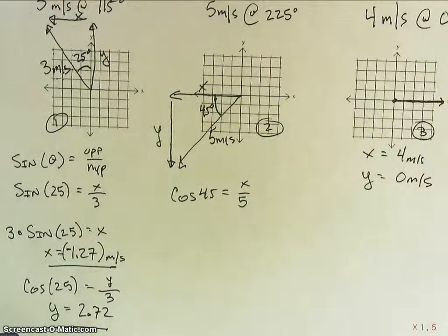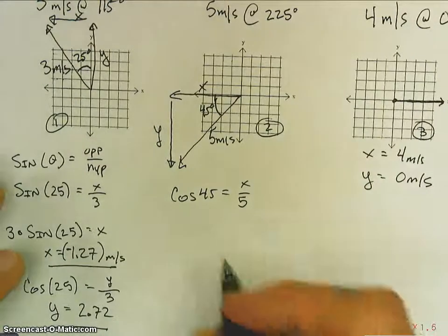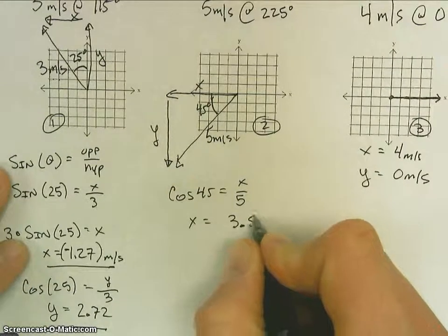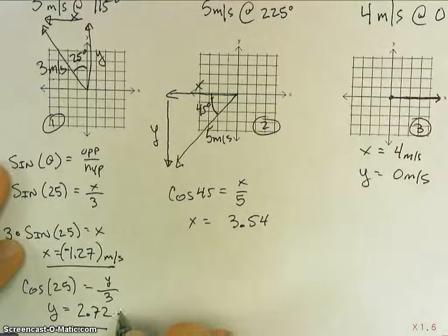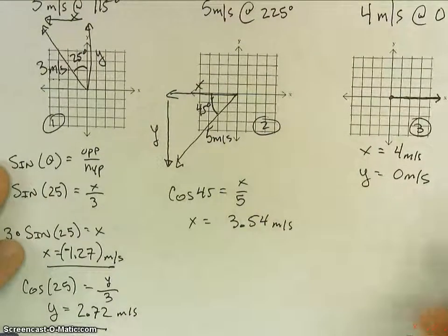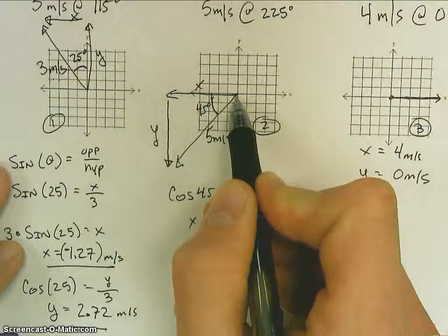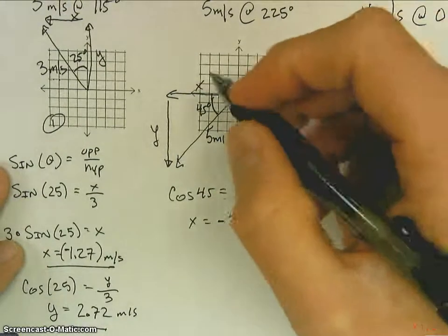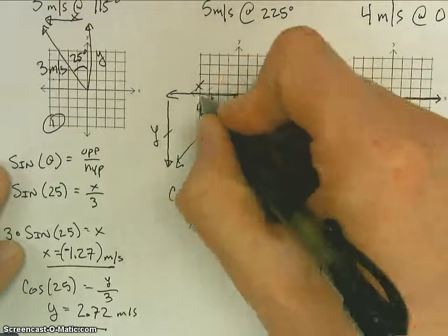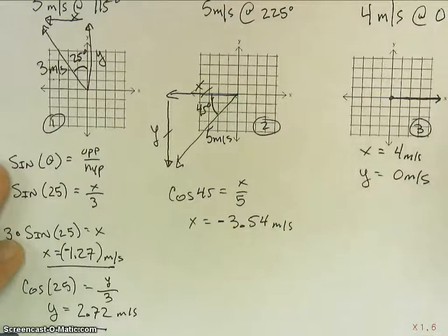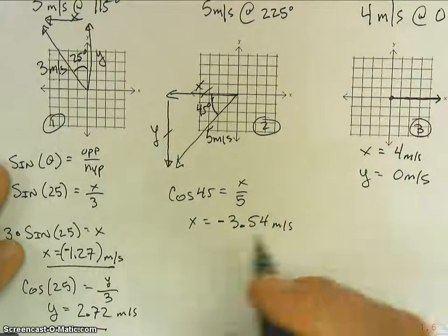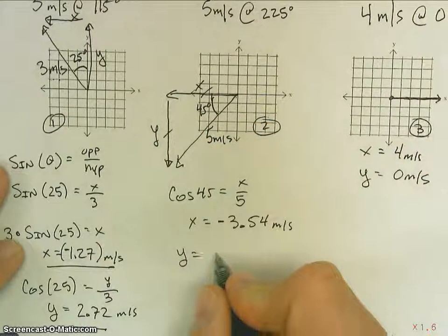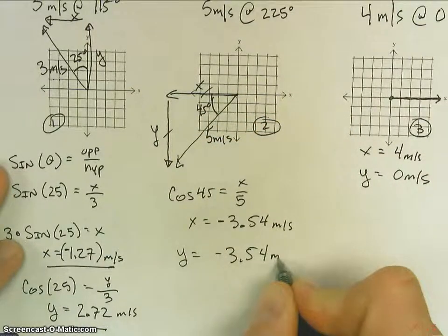So, cosine of 45 times 5 will give me my x. X ends up being 3.54 meters per second. Got to look and be careful here because my x is going from here in the negative direction, so it's actually negative. And then, knowing what we know about right triangle trig and 45 degree angles, I know that this and that are the same. You can go ahead and do the sine function to check it, but ultimately, we're going to end up with the same number. And actually, y is also negative, so it's going to be negative 3.54 meters per second in the y direction.